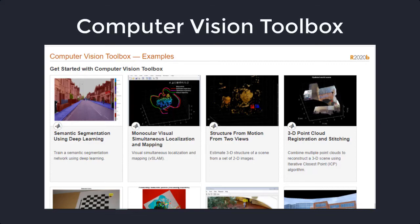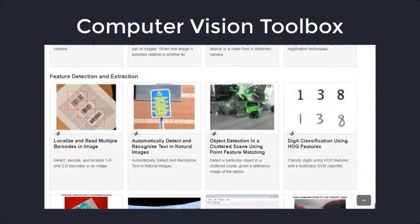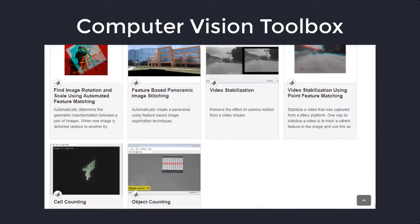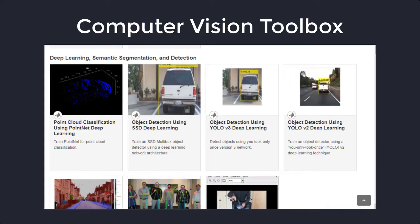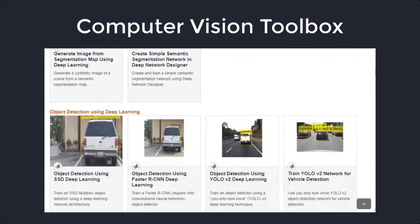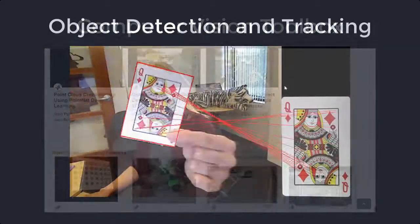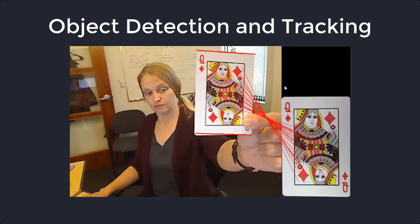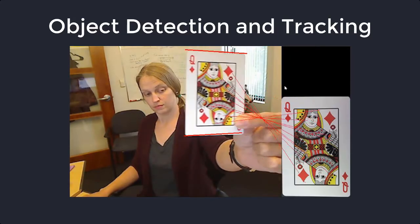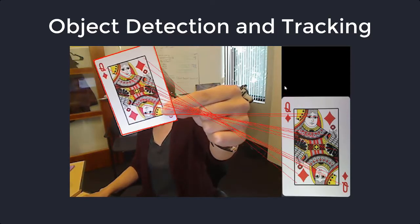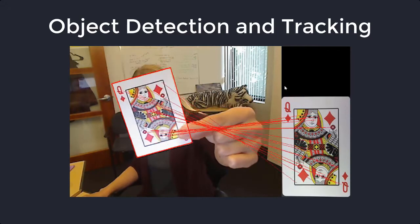Computer Vision Toolbox provides algorithms and tools for designing and testing systems for computer vision, 3D vision, and video processing. You can perform object detection and tracking workflows using feature detection, extraction, and matching.